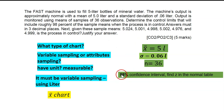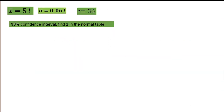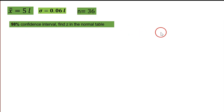We need to find the 98% confident interval Z-value from the Z-table, also called the normal table. We done this in Topic 5 during time study. Remember 3 decimal places. The information we have: X-bar-bar = 5 liters, sigma = 0.06 liters, n = 36. First step is to find Z from the normal table for 98%.